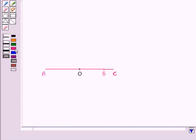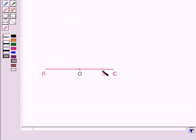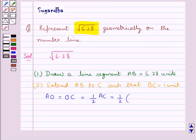Then next, O is the midpoint of AC. That is, we have AO is equal to OC is equal to half of AC, which is equal to half of... Now AC is equal to AB plus BC, that is 6.28 plus 1.